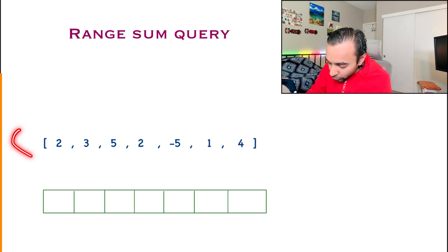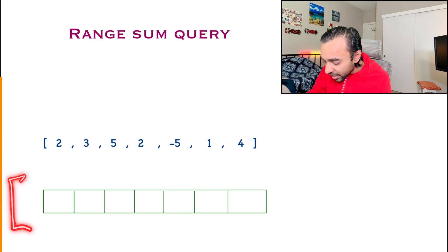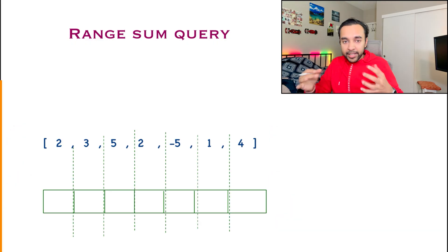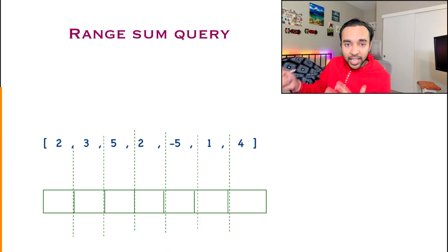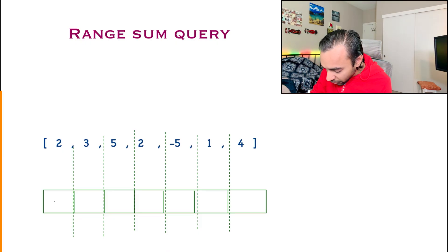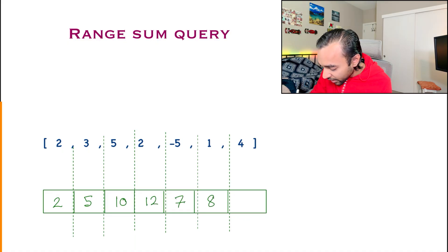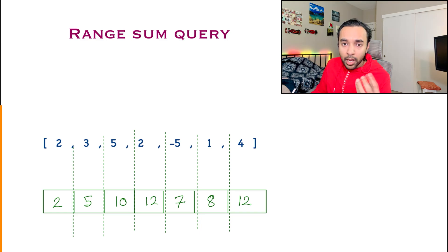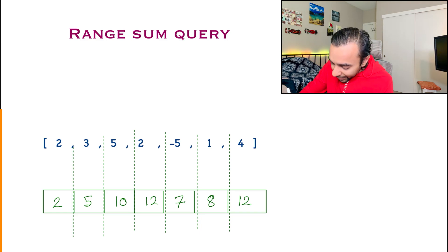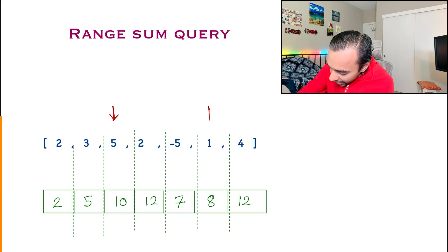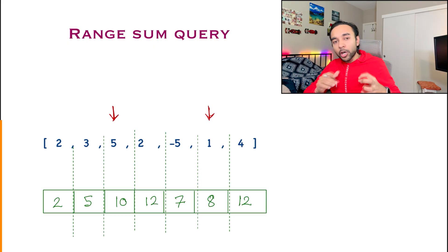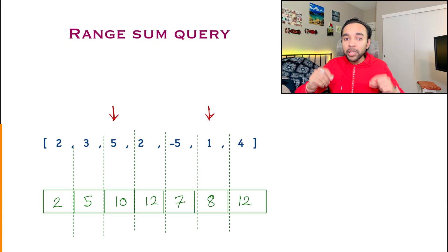What is a prefix sum? Basically you just keep a running total of all the elements in the array that you have encountered so far. For this particular array, I can create my prefix sum array with a running total of all the elements I am seeing. So first I get 2, then 5, then 10, then 12, then 7, then 8, and then 12 again. But how is this helpful? Let's say I ask you to tell me the sum between this particular number and this particular number — you have to give me an immediate answer.